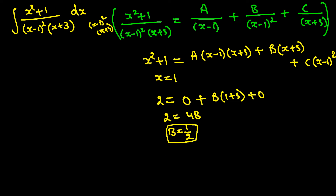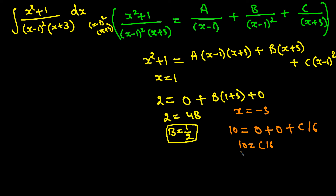Setting x equal to negative 3: the left side gives (−3)² plus 1 equals 10. The A term is 0 since (x minus 1) is zero, and the B term is 0 since (−3 plus 3) equals 0, leaving C(−3 minus 1)² equals C(−4)² equals 16C. So 10 equals 16C, giving C equals 10/16 equals 5/8.